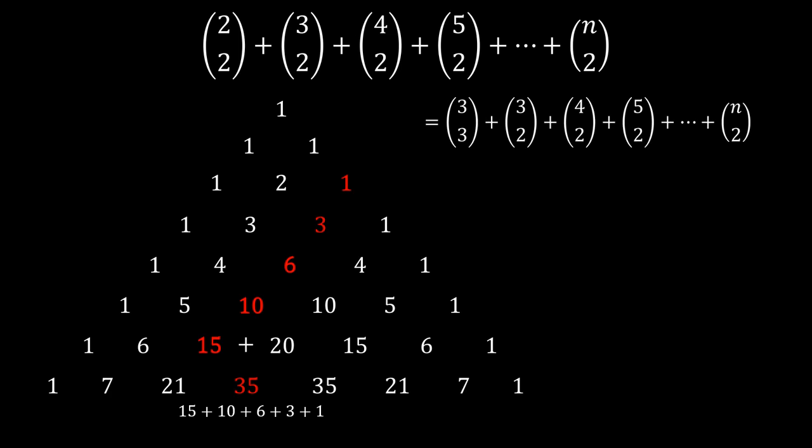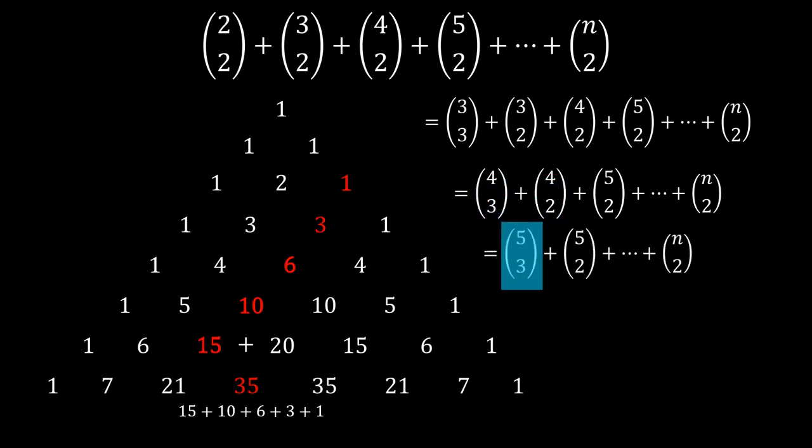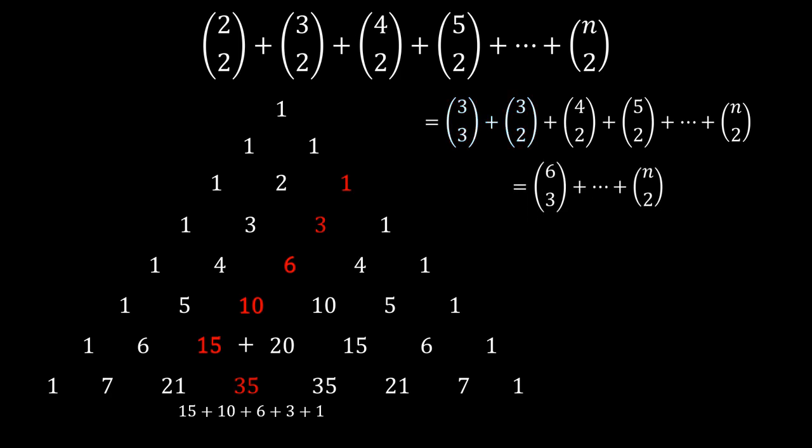Now like how we added the terms to get the term below, we can apply Pascal's identity here to give 4 choose 3, and now applying Pascal's identity again. By continuing to do this until the last 2 terms, we see that we get n choose 3 plus n choose 2. Now adding that combination using Pascal's identity gives n plus 1 choose 3.